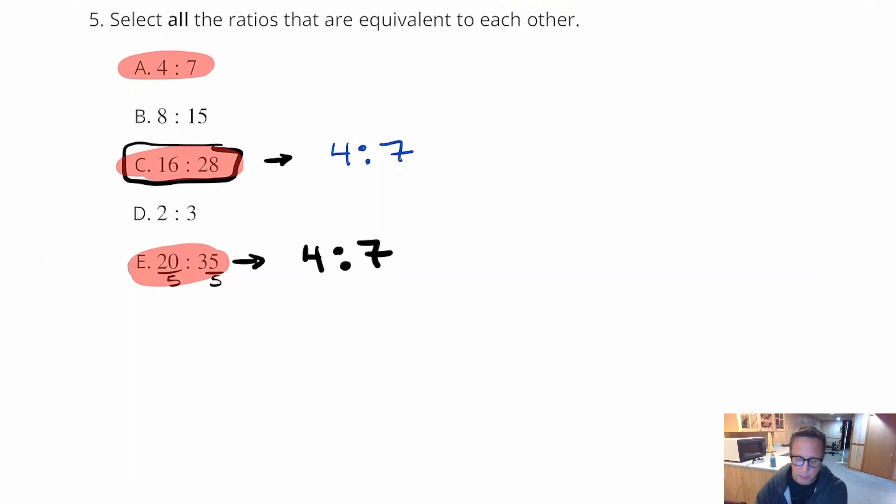We can say, if we write it in fraction form, we can say 4 7ths equals 16 28ths, which also equals 20 for 35. I know those are totally different numbers, but as a fraction, they're all equivalent. And, really, when we're talking in this unit, we really want to refer to them as ratios, not necessarily fractions.